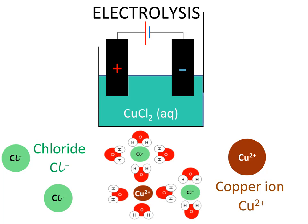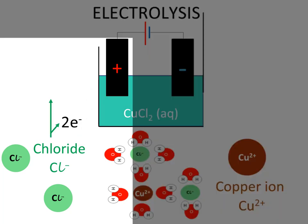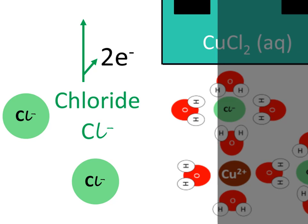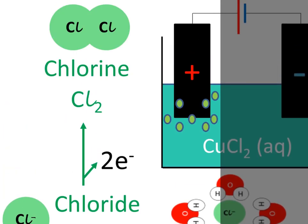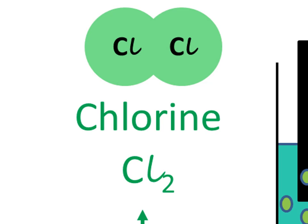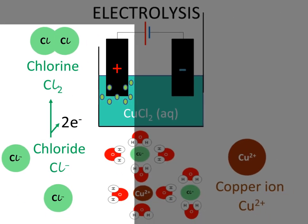When the ions reach the electrodes, they undergo chemical reactions. Imagine two chloride ions moving to the positive electrode. When they get there, the positive electrode strips each one of the electron giving it its negative charge. That changes the Cl- ion to a neutral Cl chlorine atom. This neutral chlorine atom is unstable because it no longer has a noble gas electron configuration. So these two chlorine atoms bond covalently with one another to form a diatomic Cl2 chlorine molecule.